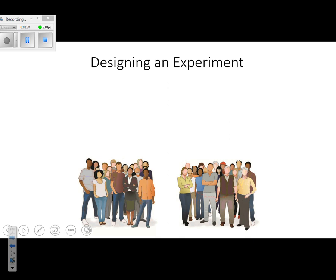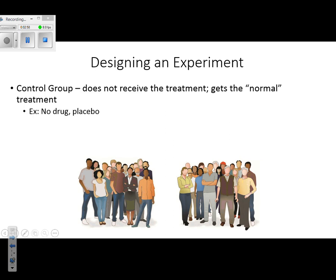The next thing we talked about when doing this lab was designing an experiment. When you design an experiment, there are a few things to remember: a hypothesis, a control group, an experimental group, and the independent and dependent variables. A control group is one that does not receive the treatment — it gets whatever is considered normal. If we're testing a drug with humans, they would get no drug, or a placebo pill. A placebo pill is really just a sugar or glucose pill, meaning there is no drug in it.